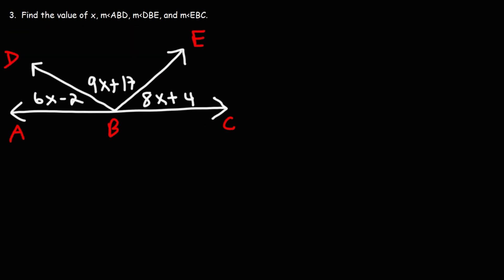Now let's work on this problem. ABC is a line, so treat this as a straight line. With this information, what is the value of X and angle ABD, DBE, and EBC? If you want to pause the video, feel free to do so. So because ABC is a line, these three angles add up to 180.